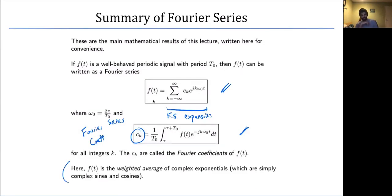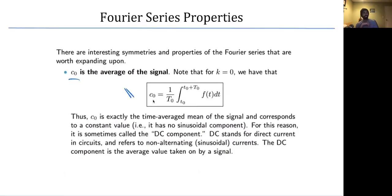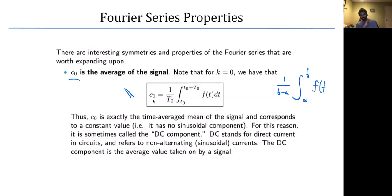If we take the coefficient equation and set k equals zero, we end up with an expression that is exactly the mean — we're adding up all the values of f(t) over an interval of length T₀ and dividing by that length. This is the classic average formula from calculus: (1/(b−a)) ∫f(x)dx. So C₀ is an average of your signal, which makes intuitive sense.